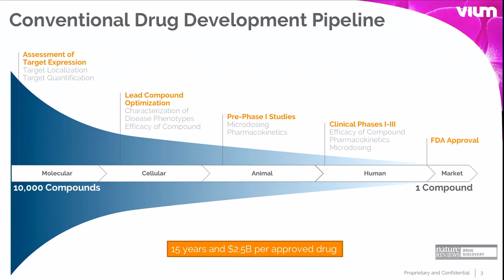A little more about the drug discovery process — a funnel view where you start on the left with around 10,000 compounds. You do molecular tests, test binding hypotheses in a test tube, then move on to cells. High-throughput screening uses big robots that put a drop of a drug on a cell and look at what happened — is it getting through the cell wall, changing something in the cell, killing it? In that way, you screen out things that are not interesting for various reasons.